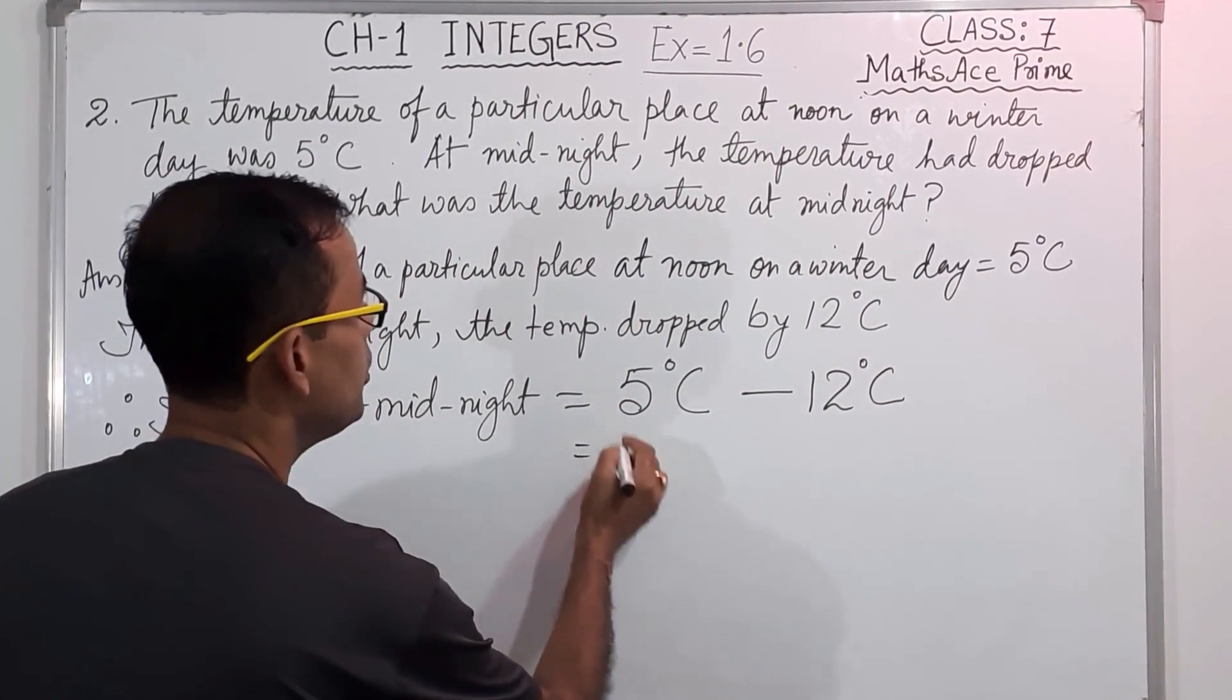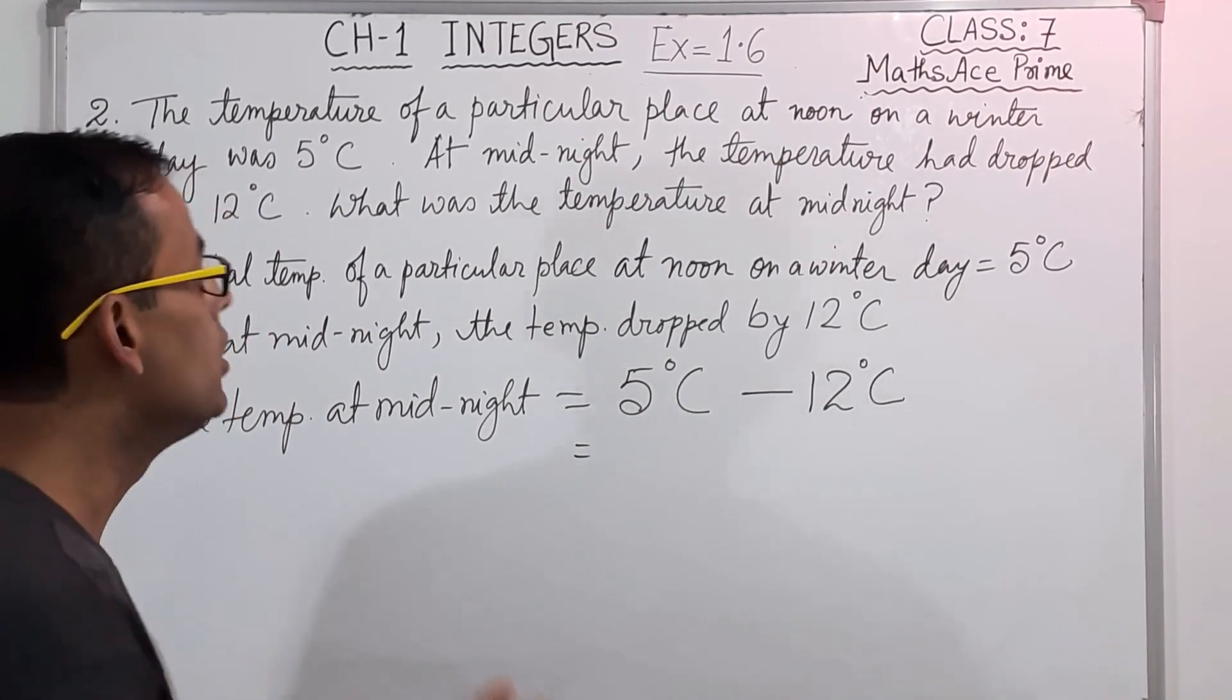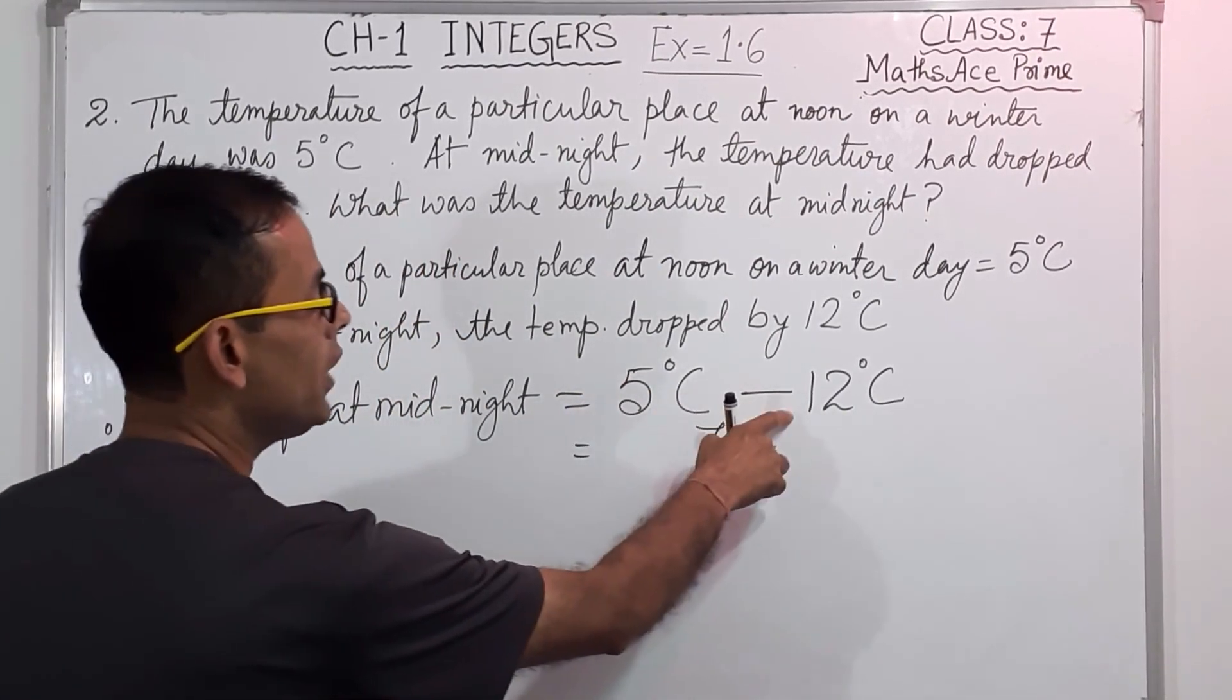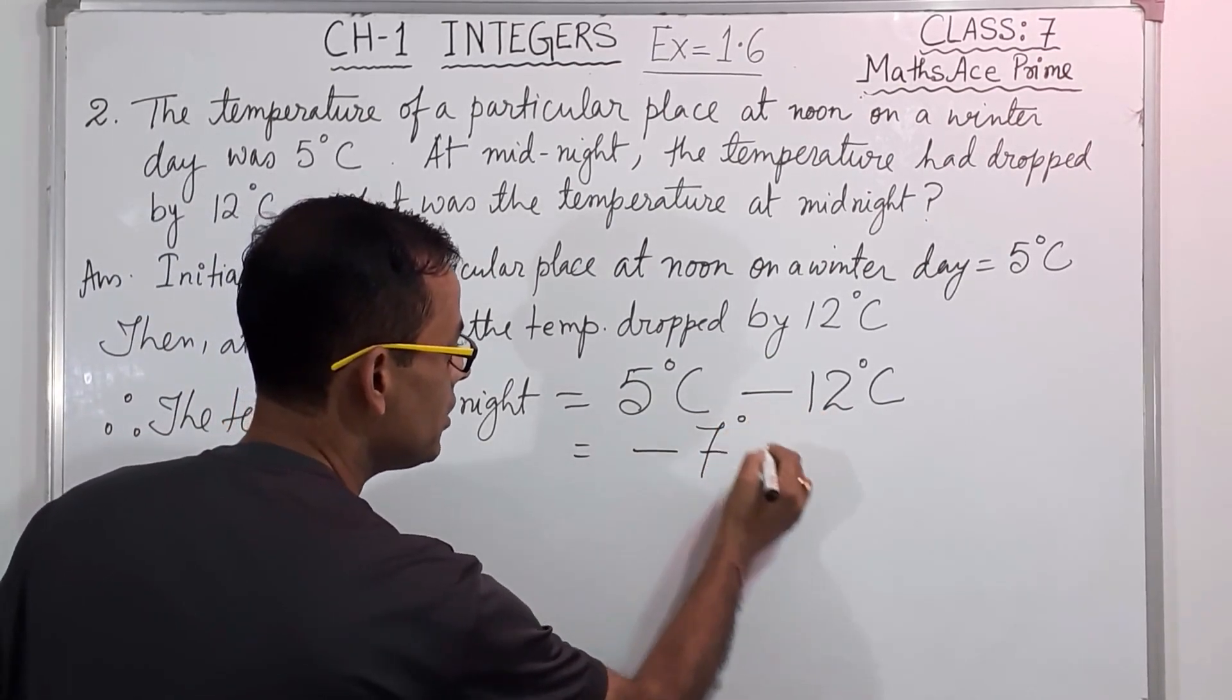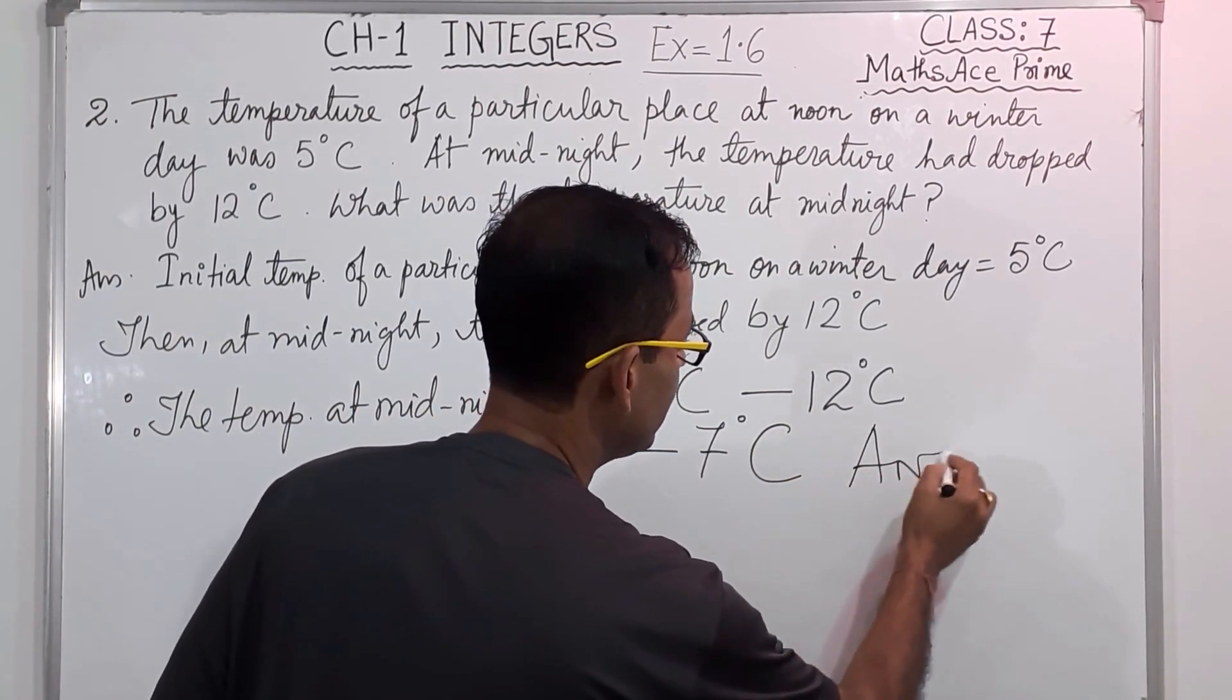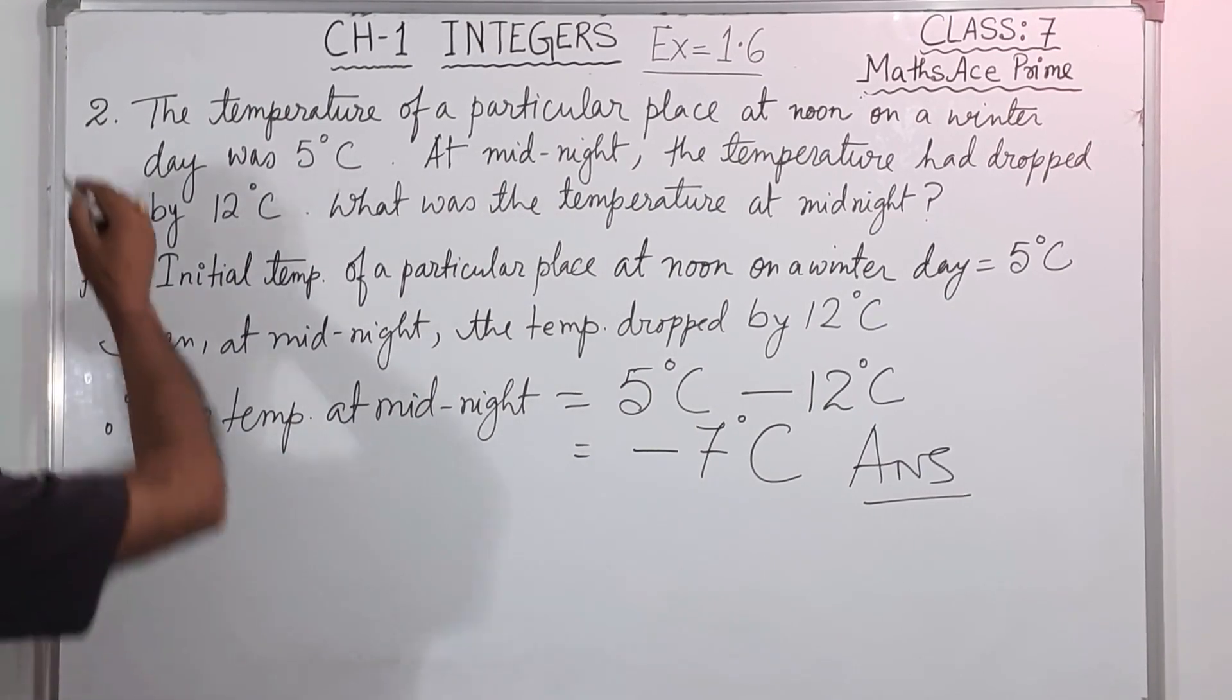Now, positive, negative, plus, minus. So different sign, so what we do? Subtract. So 12 and 5, if I subtract, how much comes? 7. And the sign will be, which one is big? 5 or 12? So 12. 12 has what sign? Minus, so minus 7 degrees Celsius. Clear? And this is the answer. Clear? So like this way, you have to solve this sum. So I think question number 2, you have understood nicely.